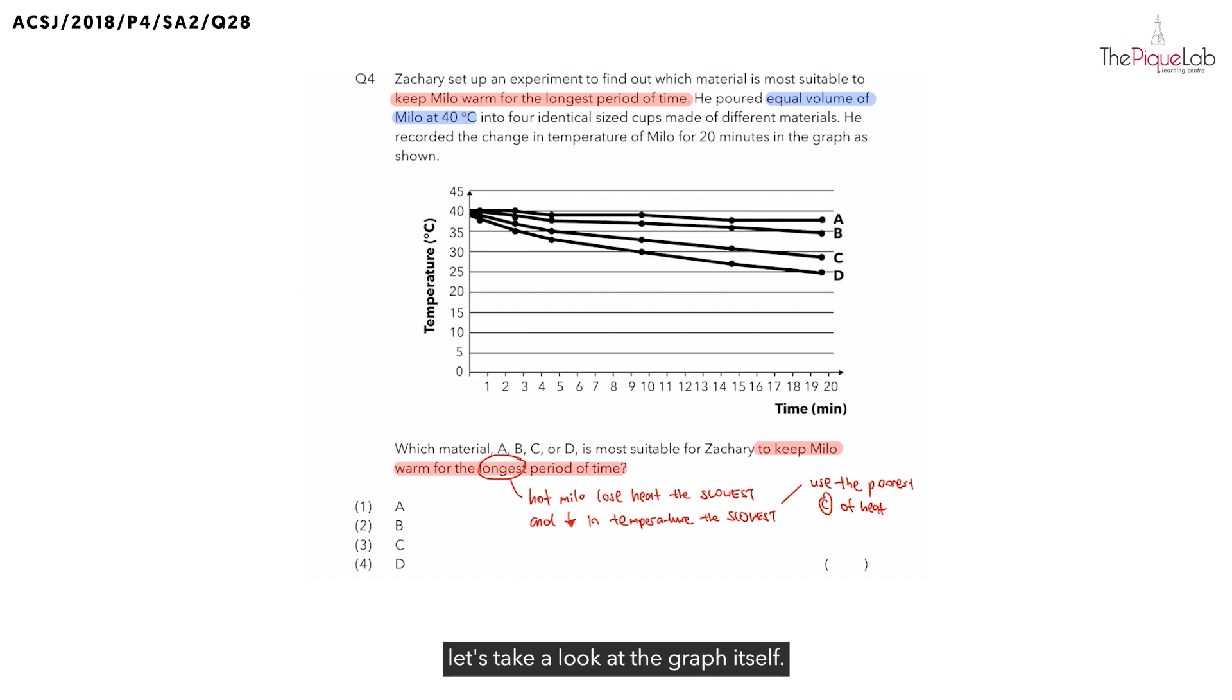Now that we have established that, let's take a look at the graph itself. How do we find out which is the poorest conductor of heat? Remember, the poorest conductor of heat is going to decrease in temperature the slowest. So, how do we find out which of the materials here decrease in temperature the slowest?